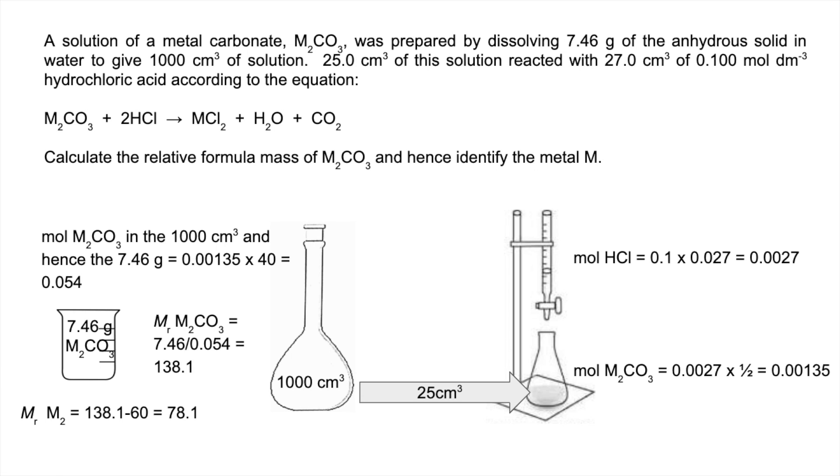So each M must have a mass of 39.1. To identify the metal itself, we've got to factor in the formula, so it's M₂CO₃. That means M must be in group 1, a 1+ ion, because there's two of them for every carbonate ion. So M is potassium.